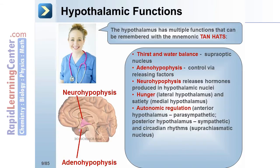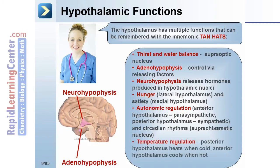Autonomic regulation and circadian rhythms: the anterior hypothalamus controls the parasympathetic nervous system, while the posterior hypothalamus regulates the sympathetic nervous system. Circadian rhythms are regulated by the suprachiasmatic nucleus. The hypothalamus is also responsible for temperature regulation — the posterior hypothalamus heats when cold, and the anterior hypothalamus cools when hot. Finally, the hypothalamus regulates sexual desire and emotions.